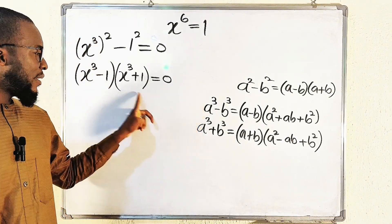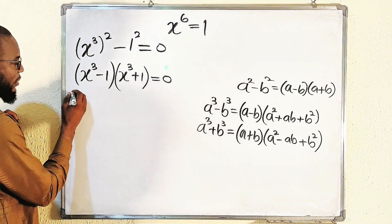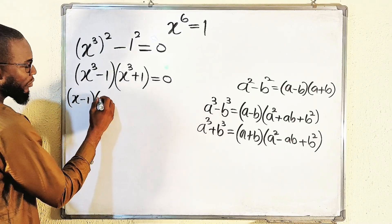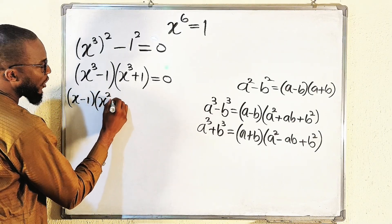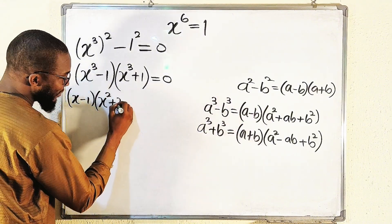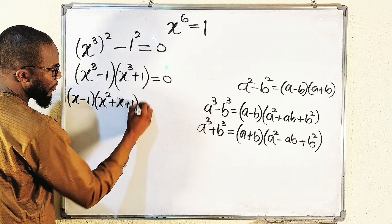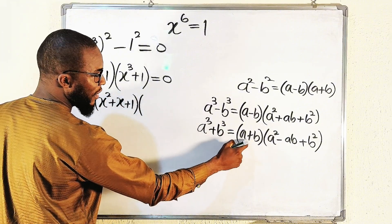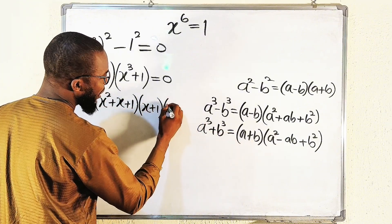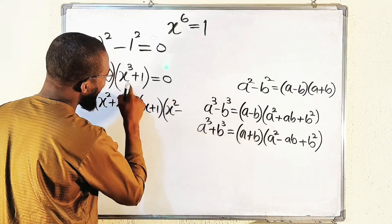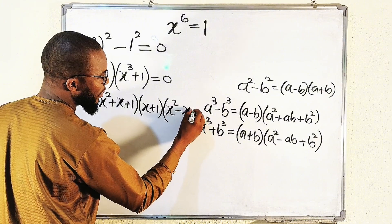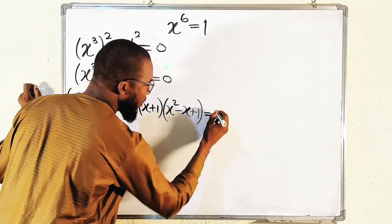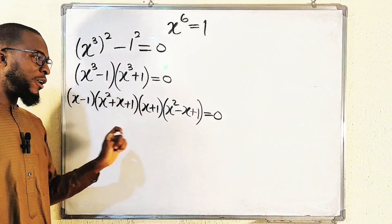Applying these formulas: (x³ minus 1) becomes (x minus 1)(x² + x + 1), and (x³ plus 1) becomes (x plus 1)(x² minus x + 1). So the full factored equation is (x minus 1)(x² + x + 1)(x plus 1)(x² minus x + 1) = 0. We now have four factors multiplying one another with result zero.